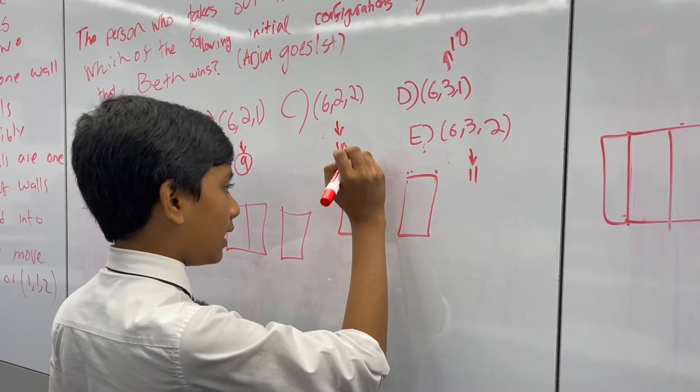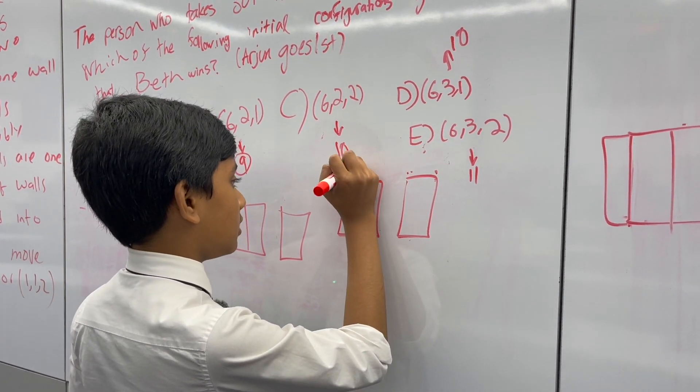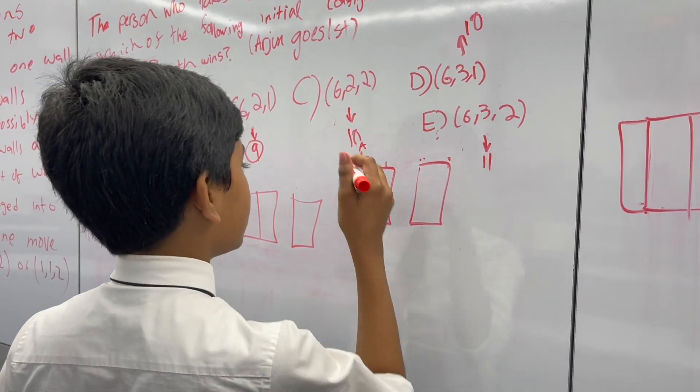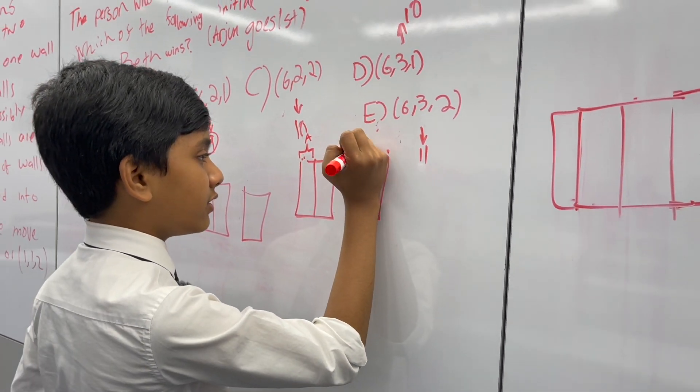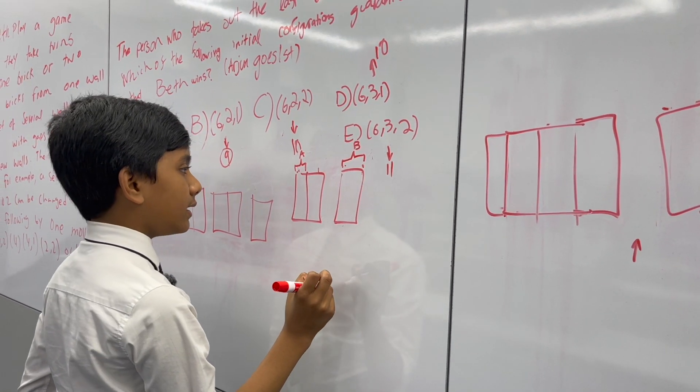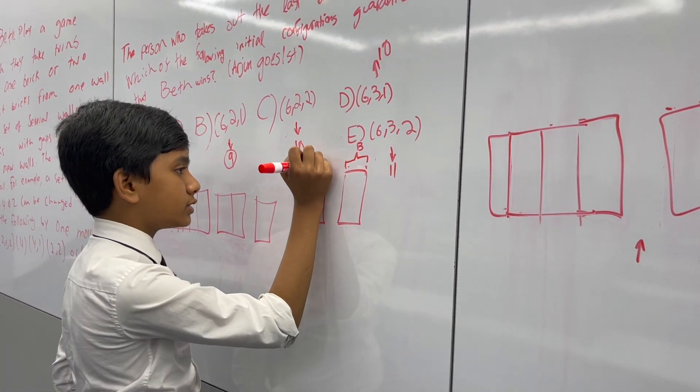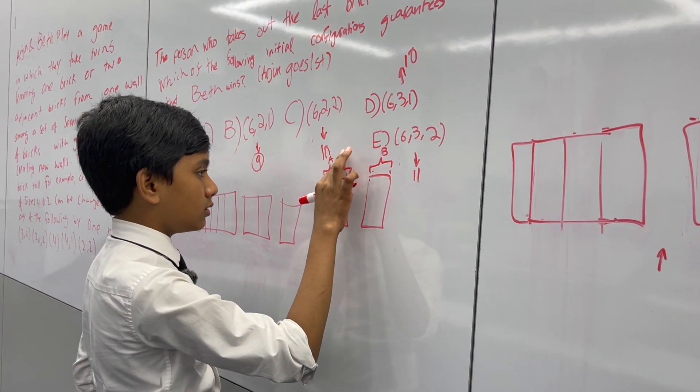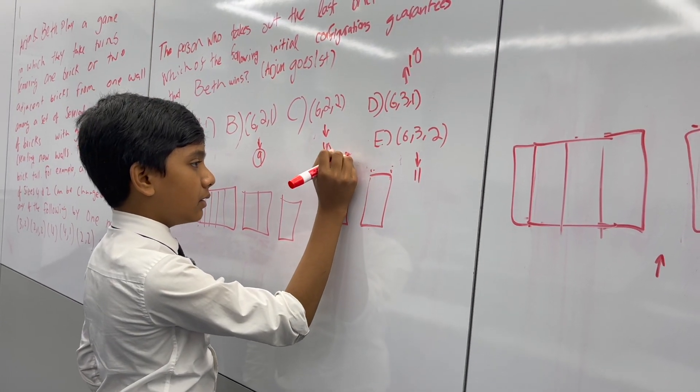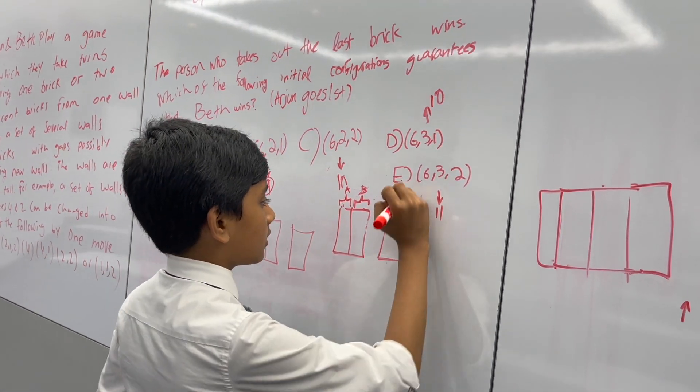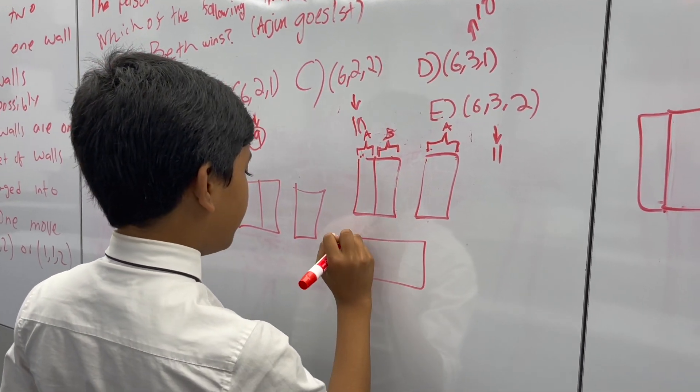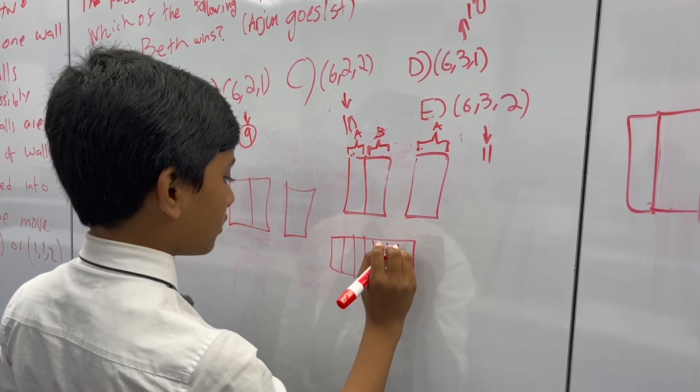So then Arjun is like, aha, you little sneaky, I can do this. Now this one is going to require a little bit of thinking, but Beth can simply go here. That's not optimal for Beth, I think. Beth can go here, so Arjun has to go here, and that means Beth starts for the six.